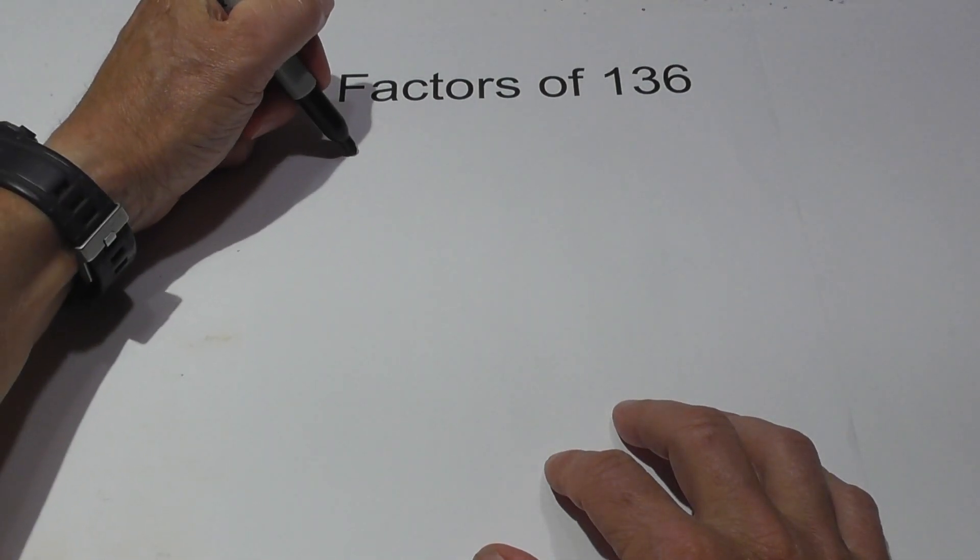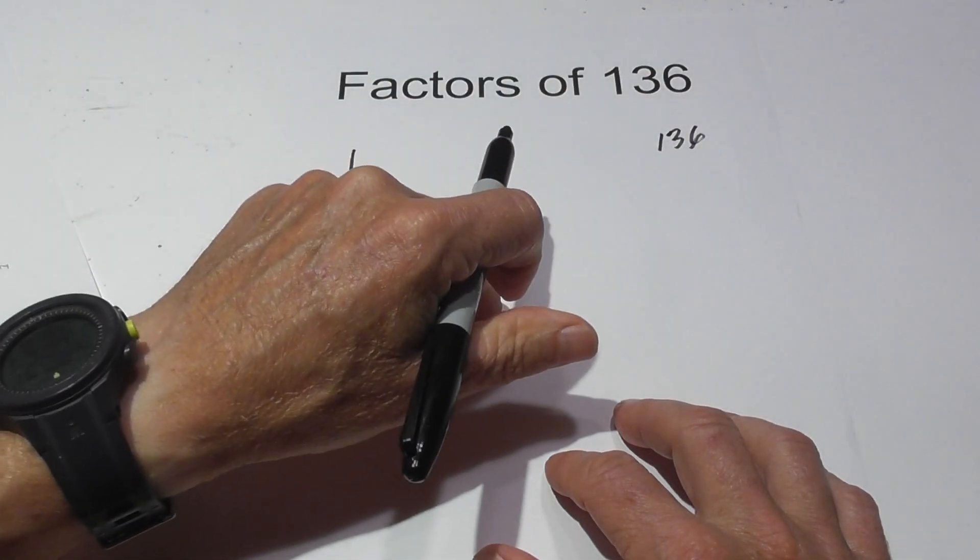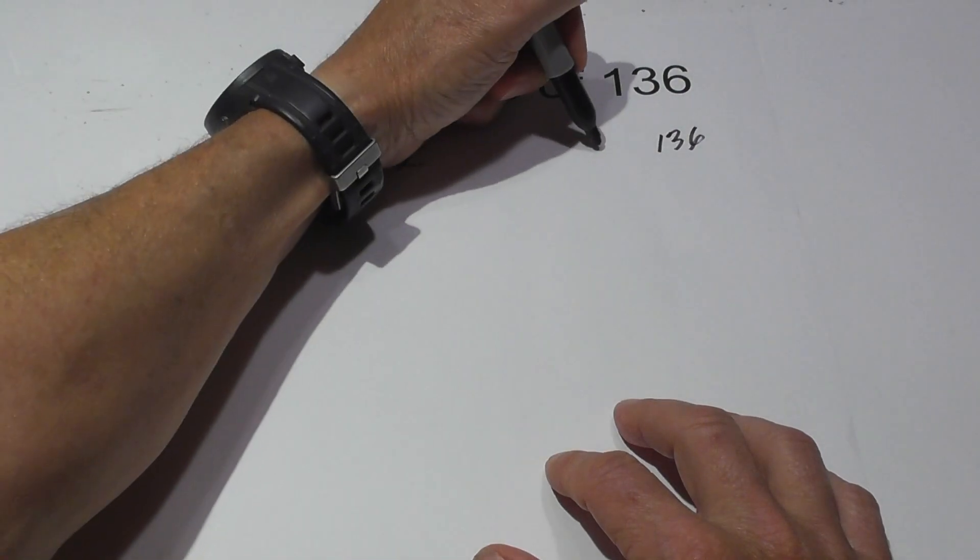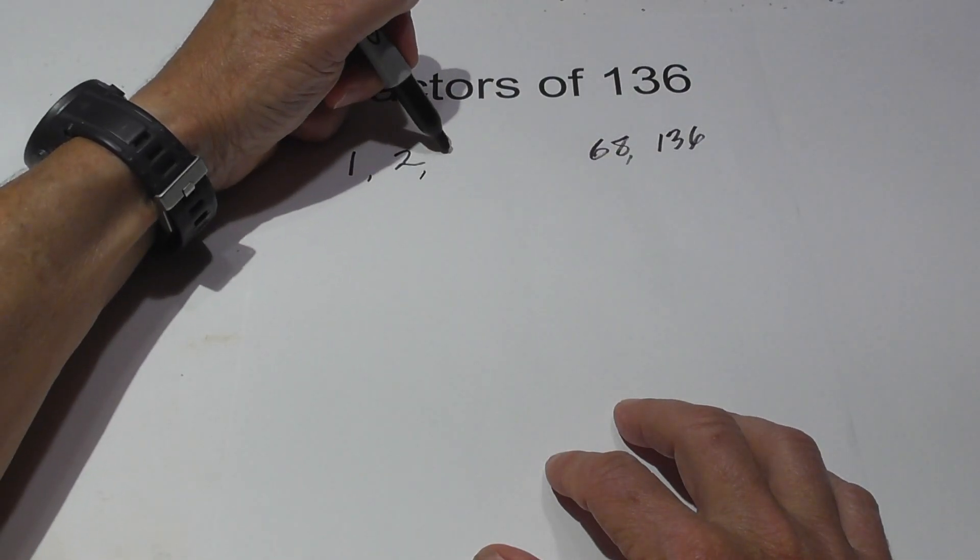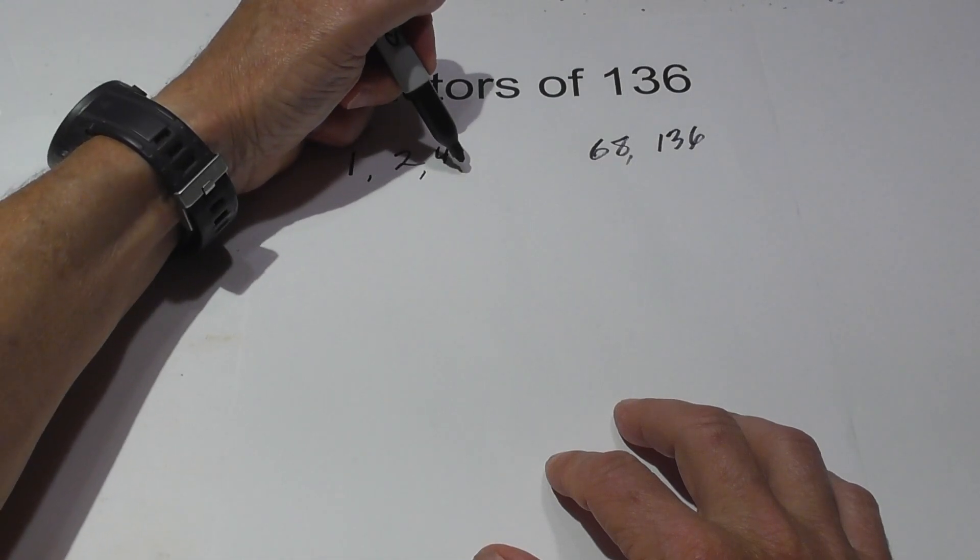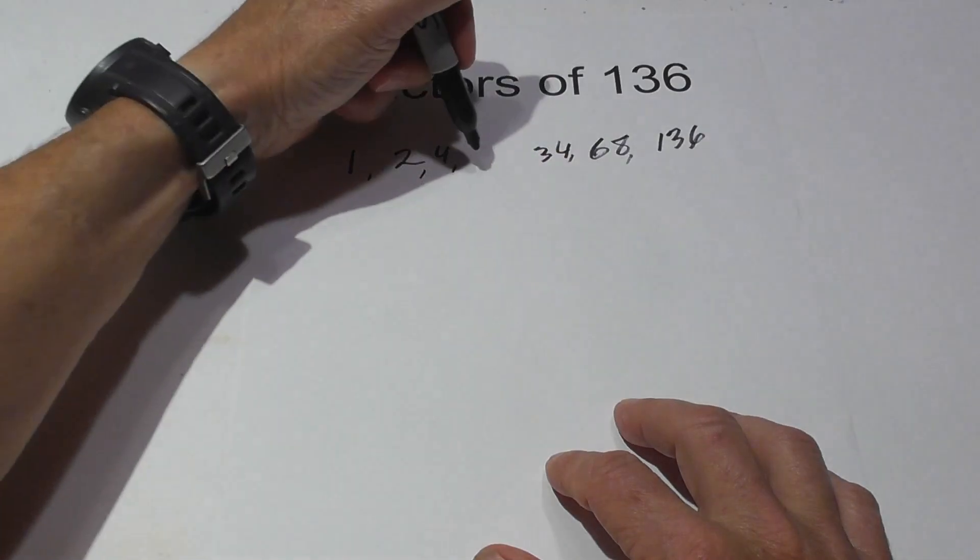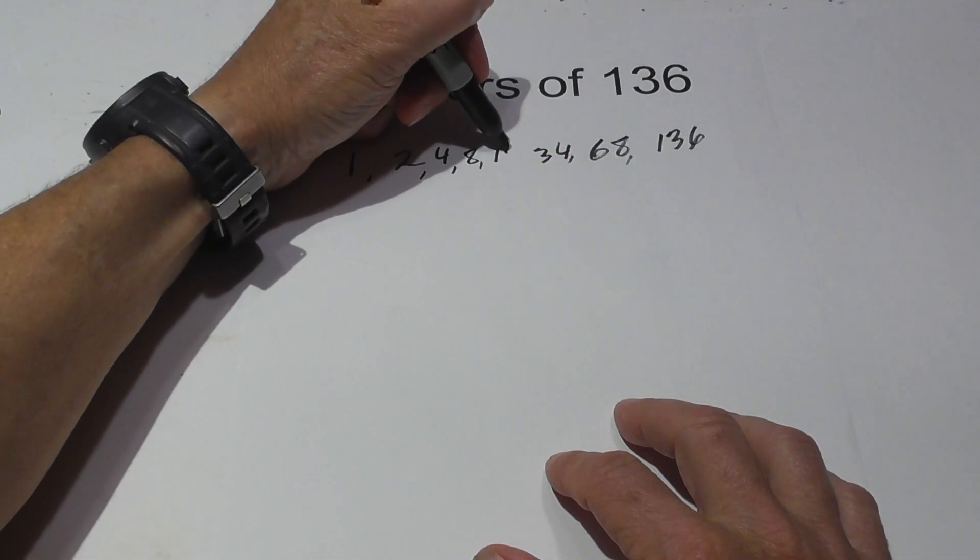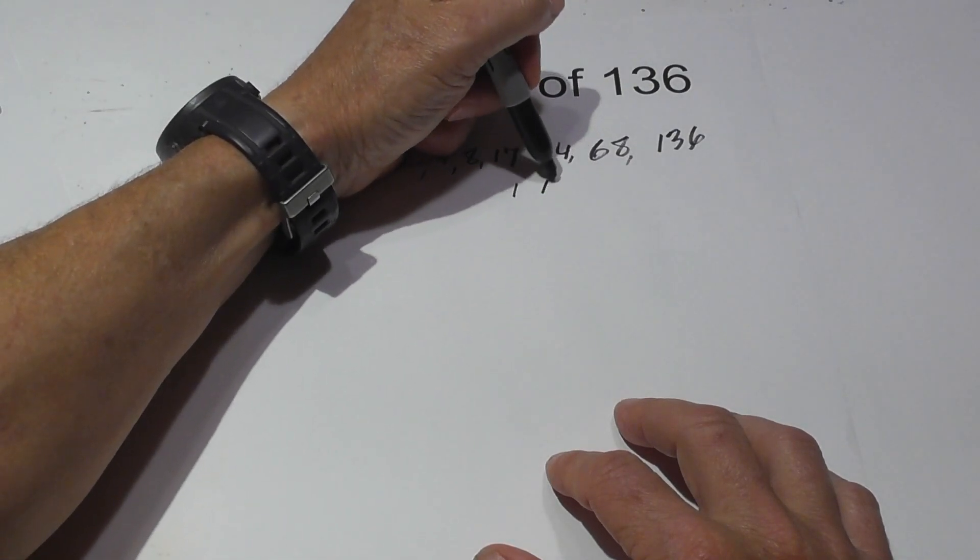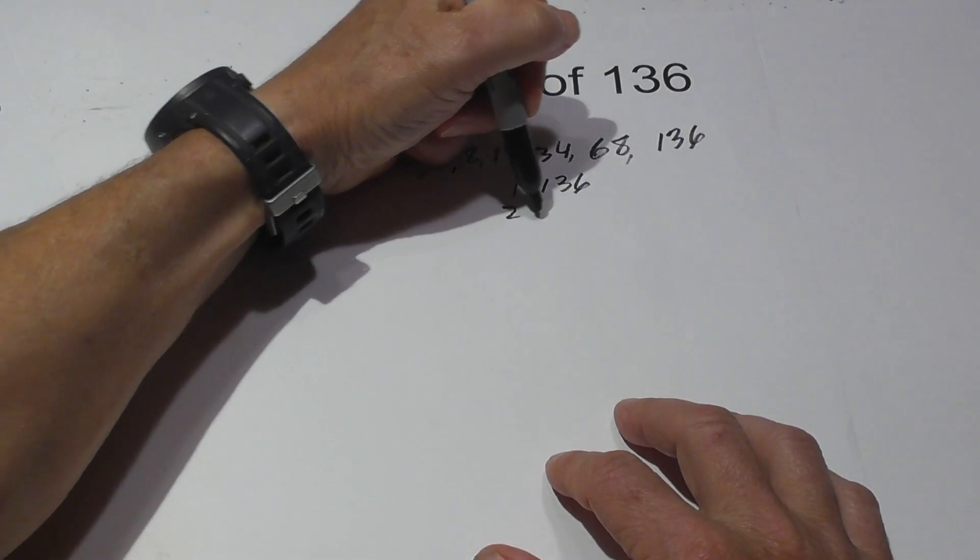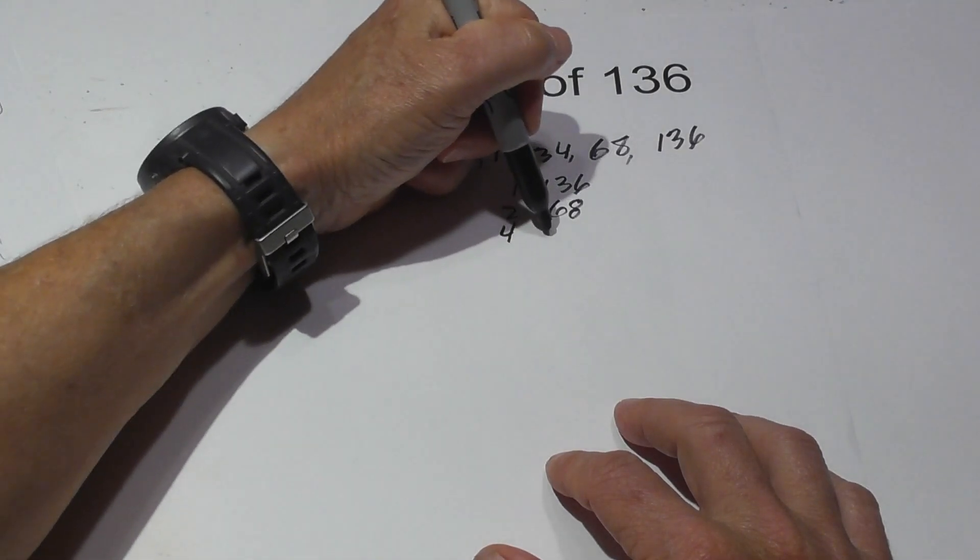136 is also a composite number so we will begin with 1 times 136, and then we have 2 times 68, and next is 4 times 34, and then 8 times 17. If you want these in pairs we have 1, 136, 2, 68, 4, 34, 8, 17.